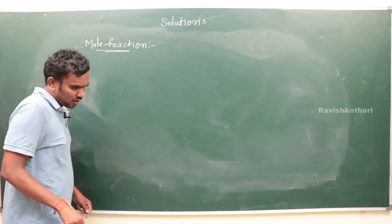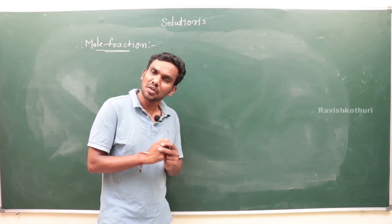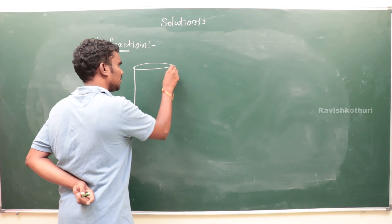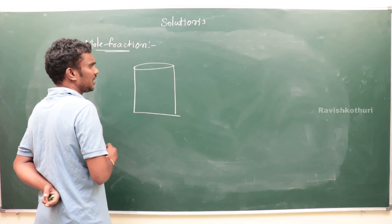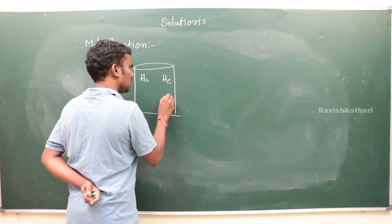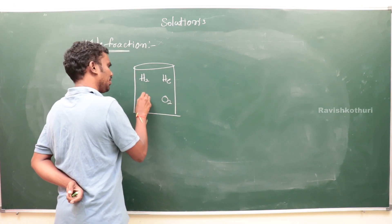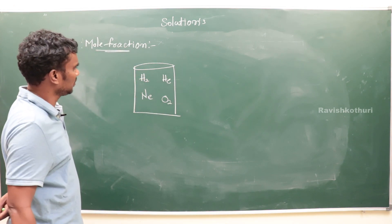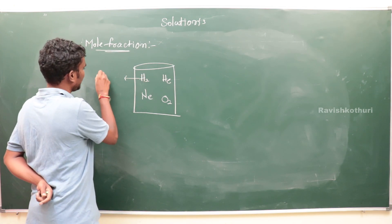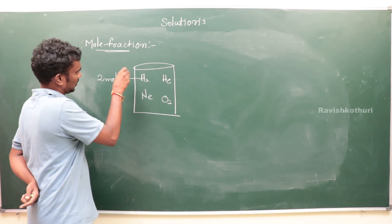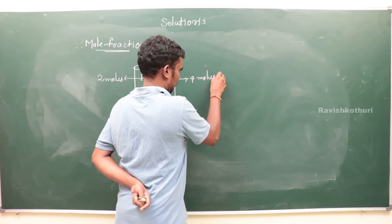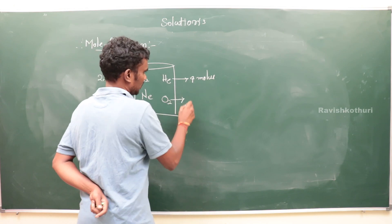I will explain mole fraction based on an example. I'm taking one container with four gases: hydrogen (H₂), helium, oxygen, and neon. H₂ = 2 moles, helium = 4 moles, oxygen = 6 moles.